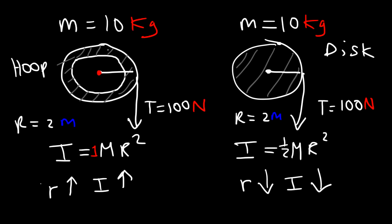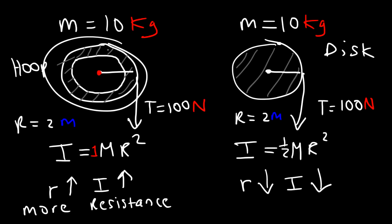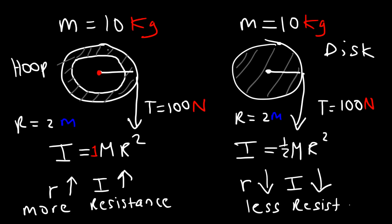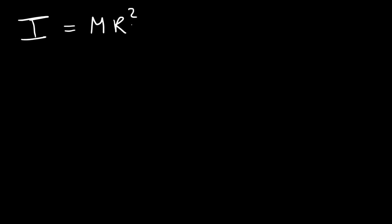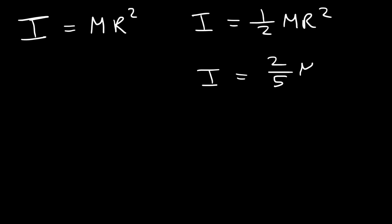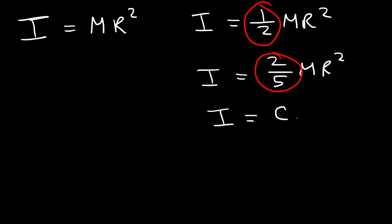So the thin hoop has more inertia, which means it has more resistance to rotation — it's harder to spin. The solid disk has less inertia, so it has less resistance to rotation and is easier to spin. The inertia of a thin hoop is MR², a solid disk is ½MR², and a sphere is ⅖MR². The constant in front of MR² relates to how mass is distributed among the object and the shape of the object. We can refer to that constant as C.